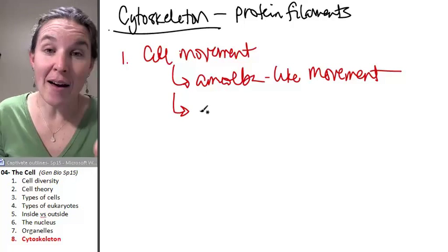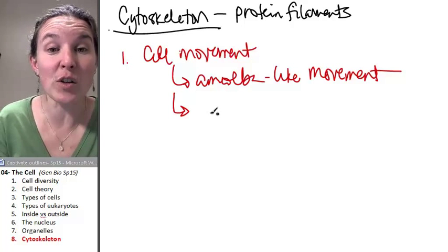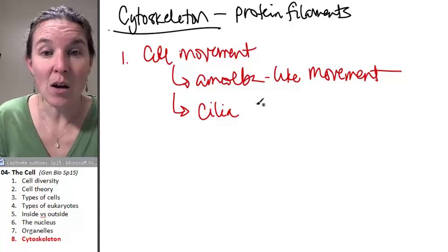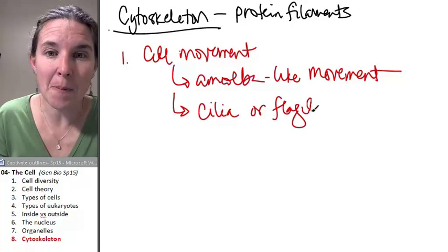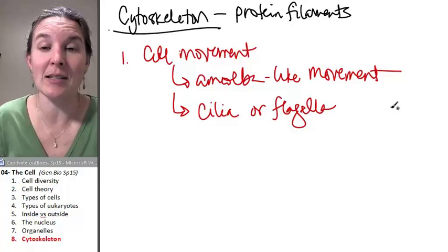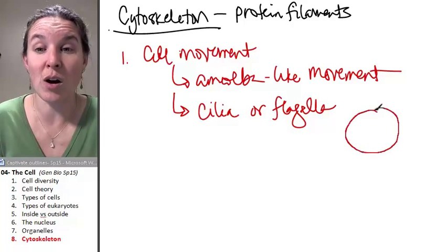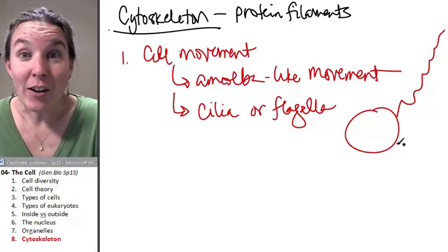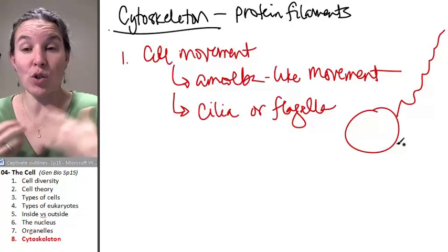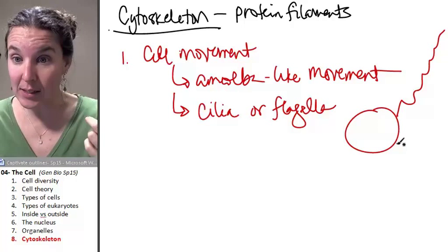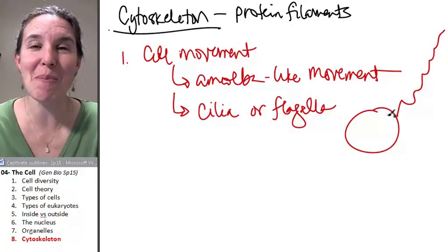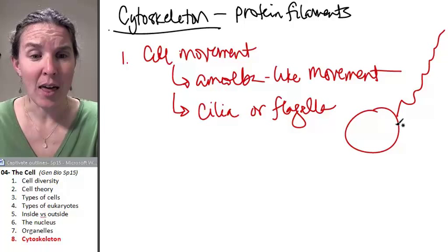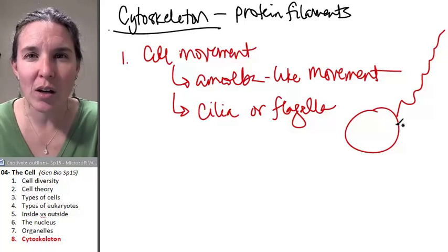But you can also have movement of the entire cell itself using structures like cilia, which are made of cytoskeleton, or flagella. And I just have to draw you a picture because any time I get the chance to draw a flagellum, I have to. What is a flagellum? It's like a tail. Flagellum usually are singular. So you usually find one on a cell, and that is like a sperm. Sperm have flagella. Think about that. That is a single cell, half a person that can swim on its own. Sperm are phenomenal.